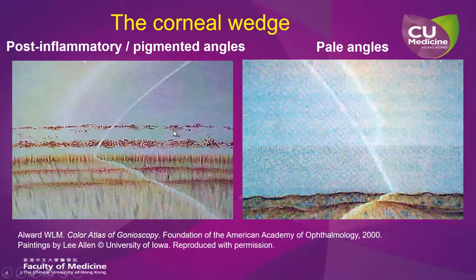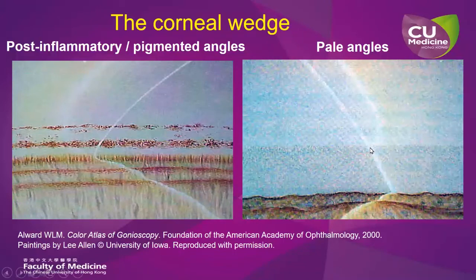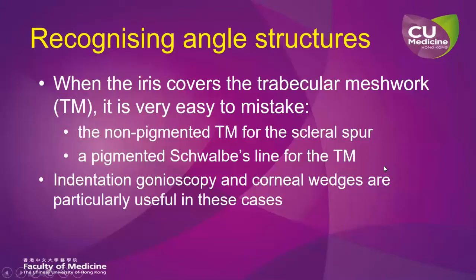Other pigmented lines anterior to Schwalbe's line are not the trabecular meshwork. The corneal wedge is also particularly useful in very pale drainage angles when there is no pigmentation. In such cases, the apex of the corneal wedge represents Schwalbe's line, and posterior to this is the area of the trabecular meshwork. Even though it is not pigmented, the corneal wedge allows us to identify its location. When the iris covers the trabecular meshwork, it is easy to mistake the non-pigmented trabecular meshwork for the scleral spur, or to mistake a pigmented Schwalbe's line for the trabecular meshwork. Indentation gonioscopy combined with corneal wedges is particularly useful in these situations.